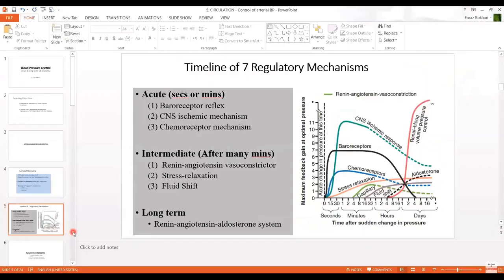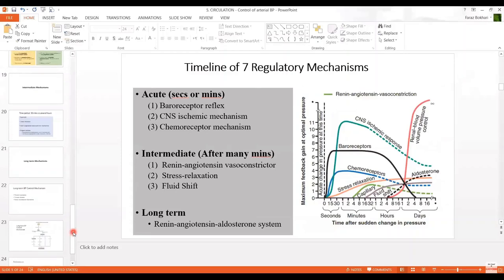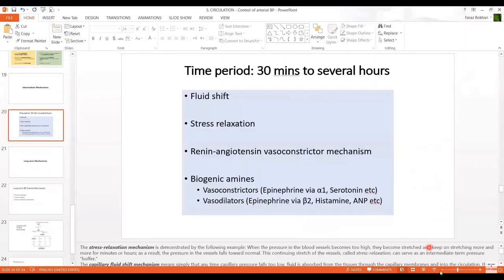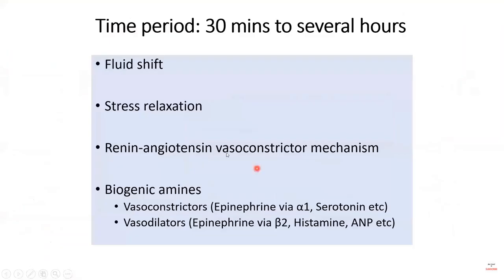The aldosterone gain rises over days and adds to the overall blood pressure regulatory response, approaching infinity over time. The vasoconstrictor mechanism (shown in green on the timeline graph) can only achieve so much — it's a stop-gap. But when you address the fundamental issue — blood volume itself — the gain is infinite because you are handling the situation from its root. The intermediate renin-angiotensin vasoconstrictor component bridges the gap before aldosterone takes full effect.